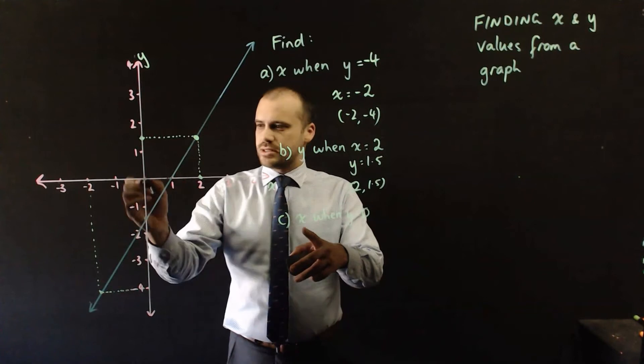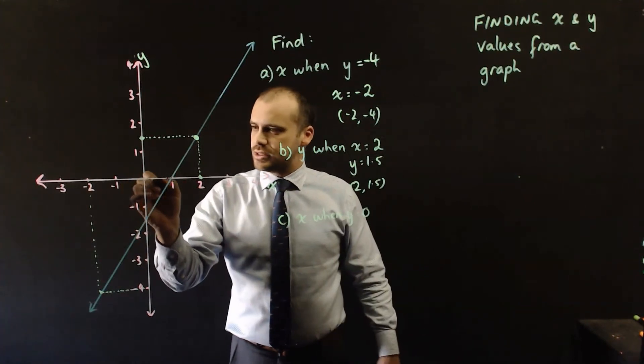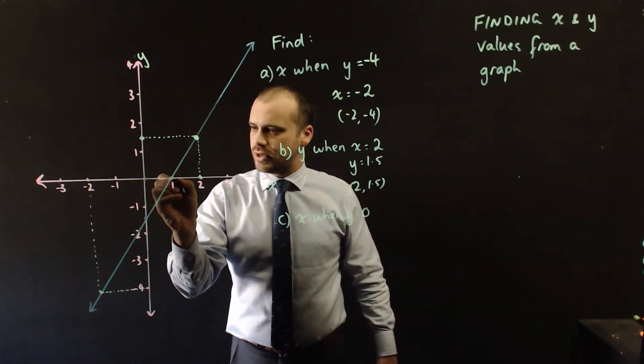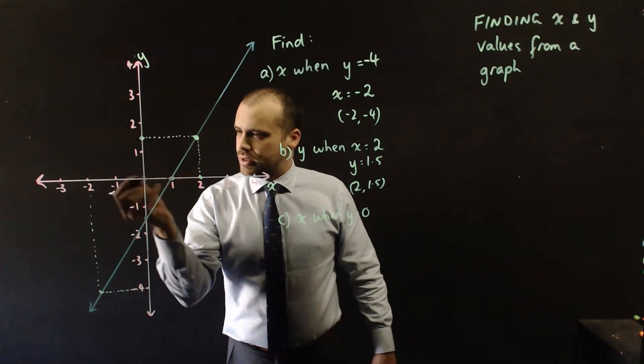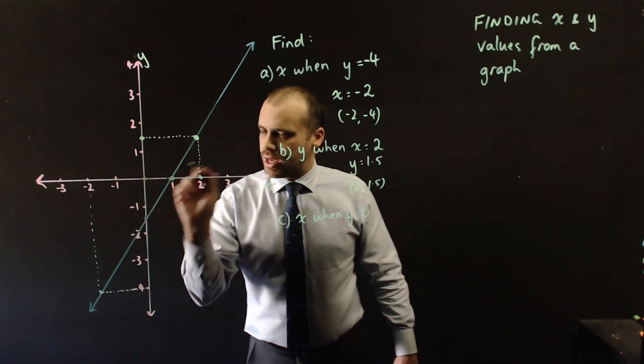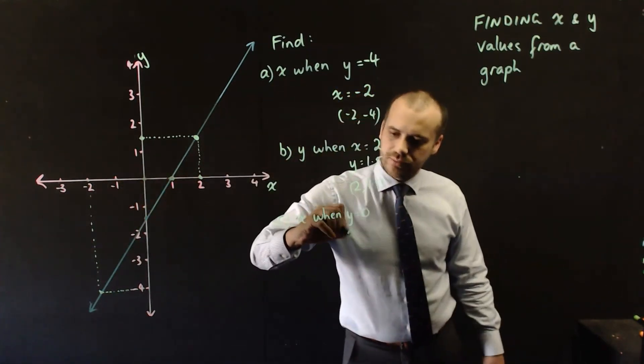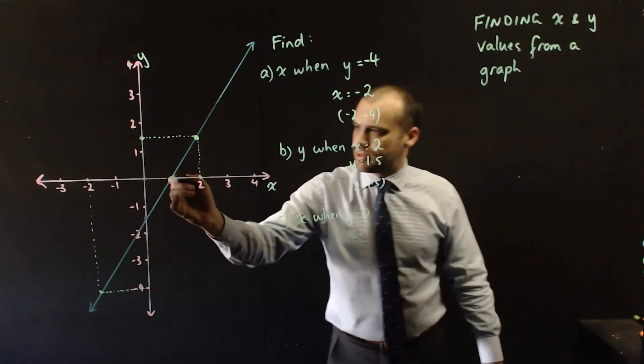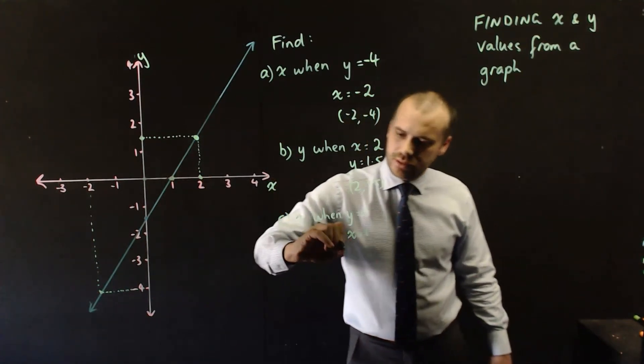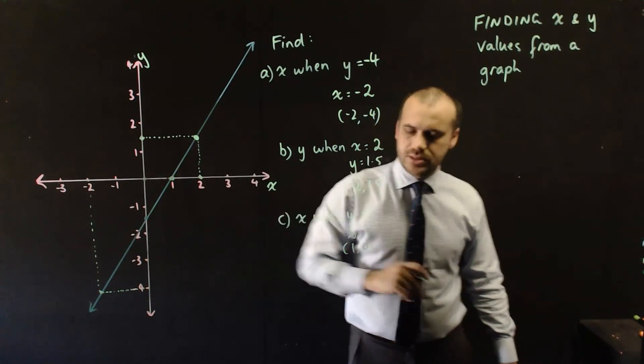And I want to know what x is. So I move along the x axis until I hit my linear graph here. Okay. So when y is equal to 0, x is equal to 1. And that means that that point there is 1, 0.